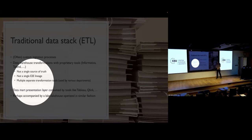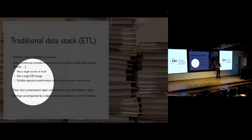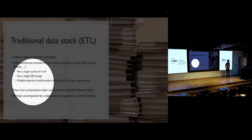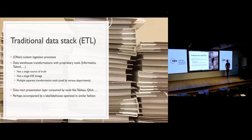If you're using more than one transformation tool, there will be no single source of truth and no end-to-end lineage. Reliable data pipelines and fresh data are key for businesses, but also for researchers who want reproducible results. If you have a random list of scripts or Jupyter notebook cells running out of order, results may not be reproducible. The visualization layer was traditionally handled by tools like Tableau, Qlik, Power BI, often accompanied by a data lake or lakehouse.